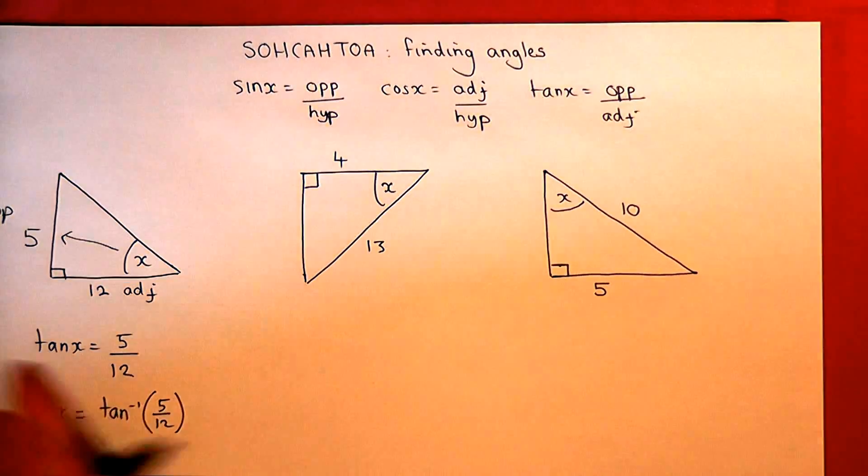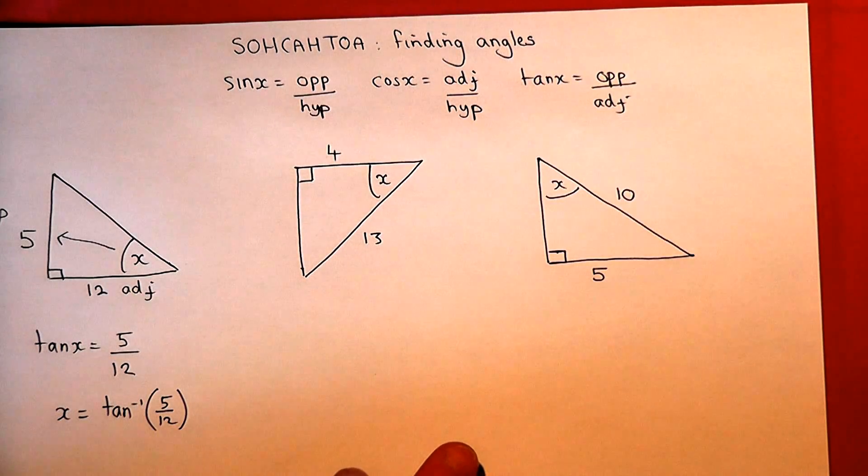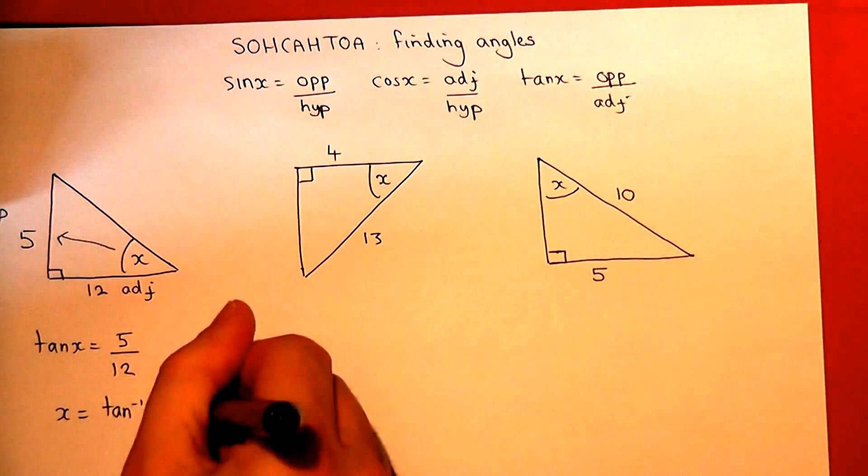So it's inverse tan of five twelfths. So we put that into our calculator, and we get the answer, which is 22.6 degrees.